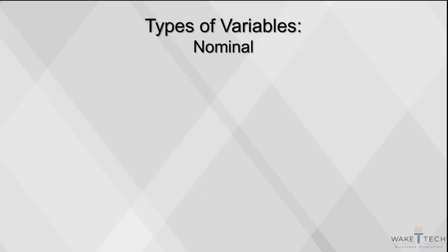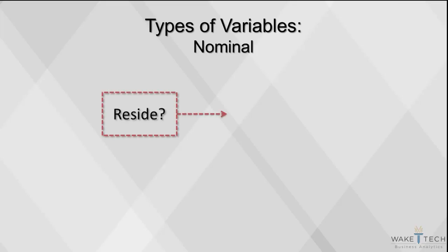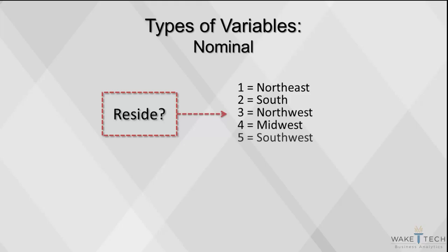For nominal categorical variables, however, the order makes no difference. Here's an example. For the variable reside: 1 equals northeast, 2 equals south, 3 equals northwest, 4 equals midwest, and 5 equals southwest. It doesn't matter what order we use for these categories. Midwest can be coded as 4, 2, or 5, because there's not an ordered value associated with each response.